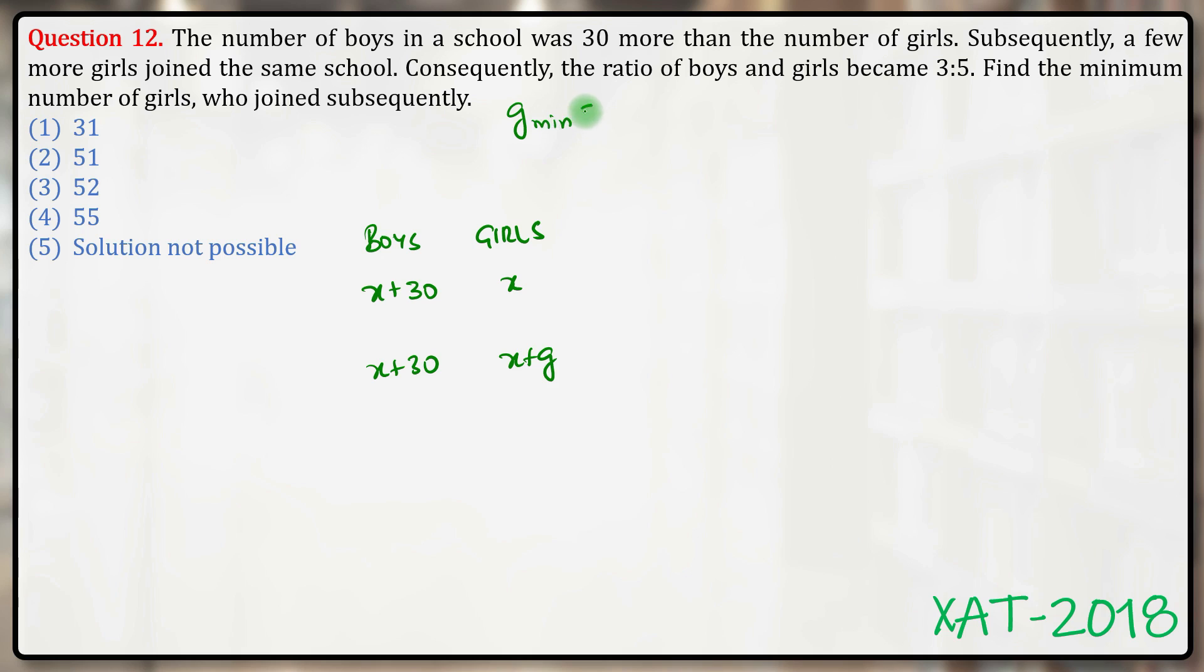Number of boys won't change—it will be x plus 30. We need to find the minimum value of g. Let's call it g_min. We know that the ratio of boys and girls was now 3 is to 5, so let me write an equation. Let's cross multiply.